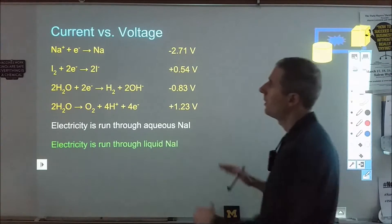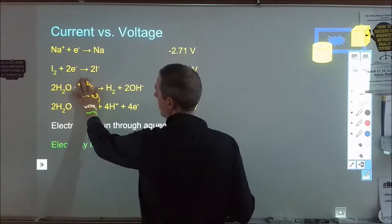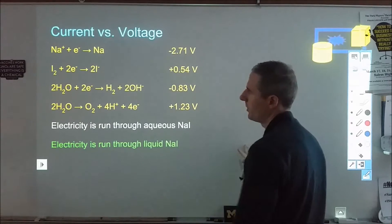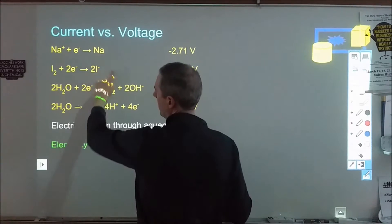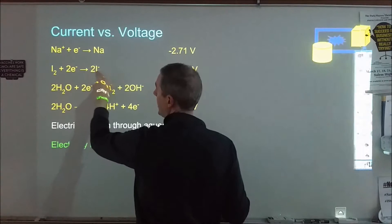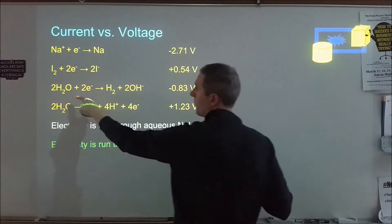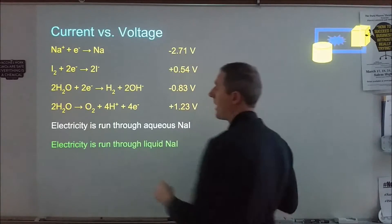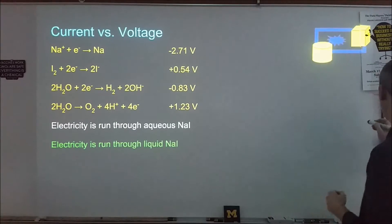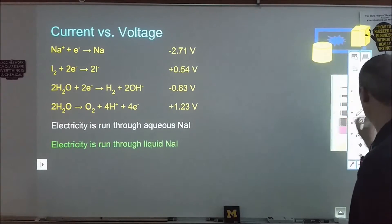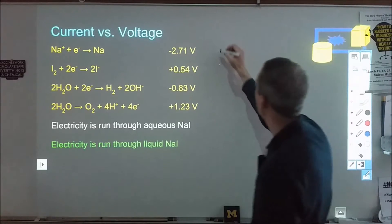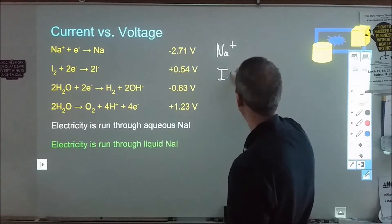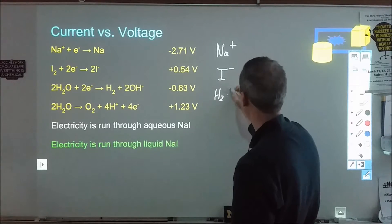Here are some redox potentials for four different reactions. One is for the reduction of sodium ions to sodium metal. One is for the oxidation of iodide to iodine. One is for the reduction of water to hydrogen gas, and one is for the oxidation of water to oxygen gas. If we go back and look at electrolysis being run through sodium iodide, again we have three different things available: sodium ions, iodide ions, and water.